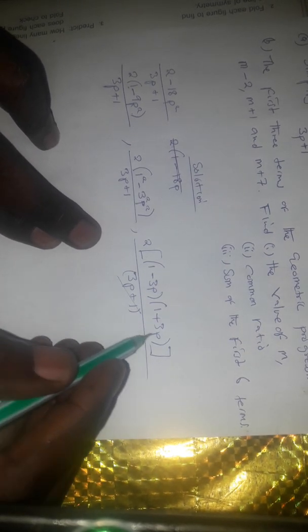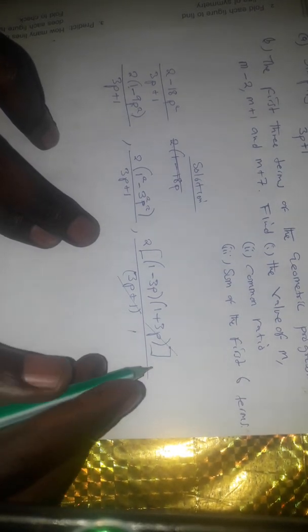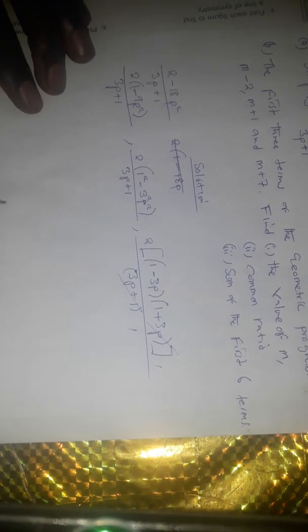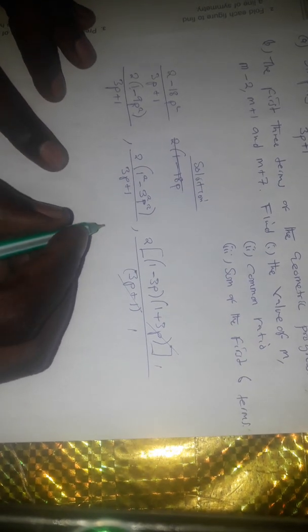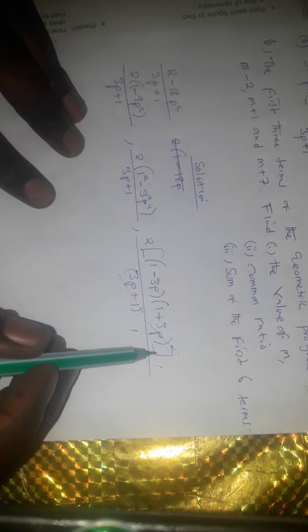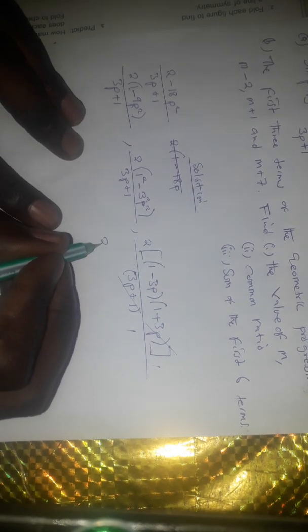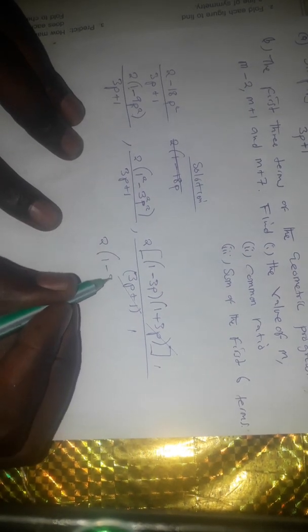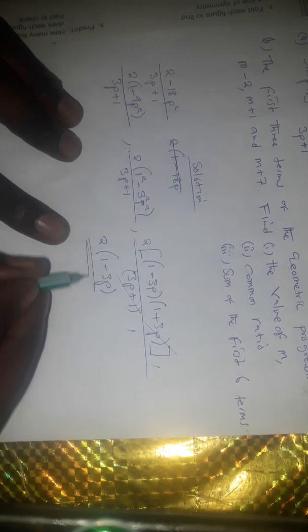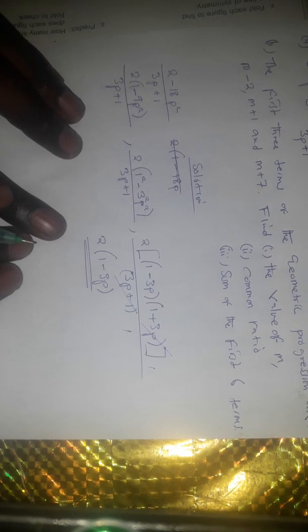We can now see that we have something similar in the numerator and the denominator. The (1 plus 3p) part divides, leaving 1. So this can now be simplified further — we take away the brackets and remain with 2(1 minus 3p) divided by 1, which is the same. That is our solution for Part A.